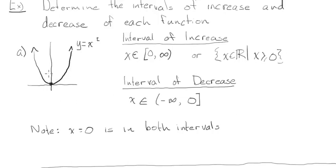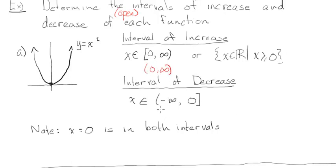Often questions will specify open intervals of increase, meaning no square brackets. In that case we'd write (0, ∞) and (-∞, 0), and you don't have to worry about zero being in both intervals. But strictly by the definition, zero would actually be included in both intervals.